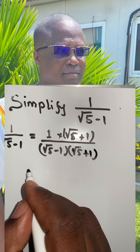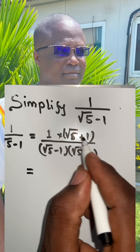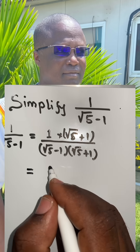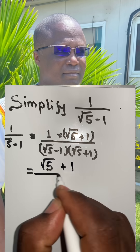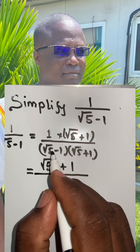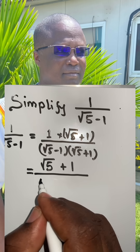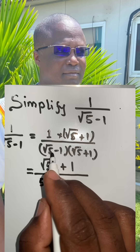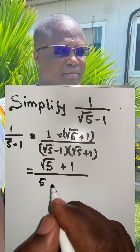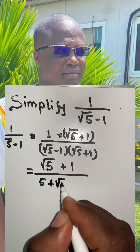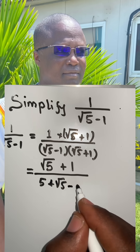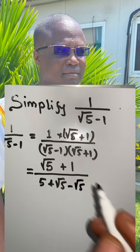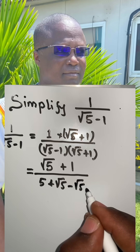So this simplifies further to: 1 times root 5 plus 1 remains root 5 plus 1, divided by root 5 times root 5 which is 5, plus root 5 times 1 which is plus root 5, minus 1 times root 5 which is minus root 5, and minus 1 times 1.